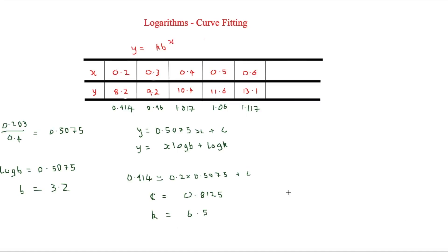We can rewrite the final answer in the form kb^x as y = 6.5 × 3.2^x. This is curve fitting — very useful for things like lines of best fit, or converting a non-linear relationship into a linear one. Thanks for watching, see you soon.